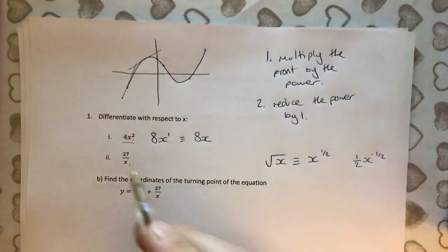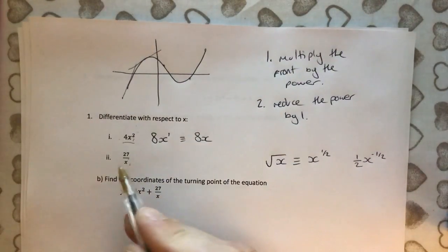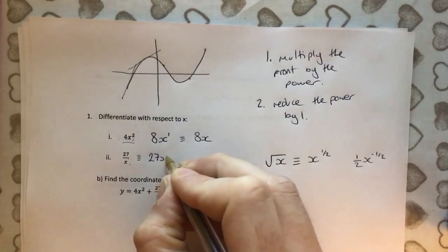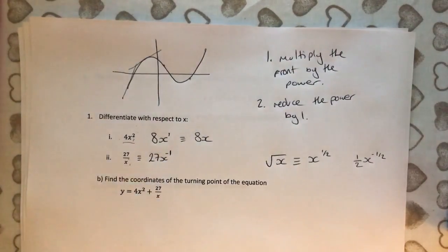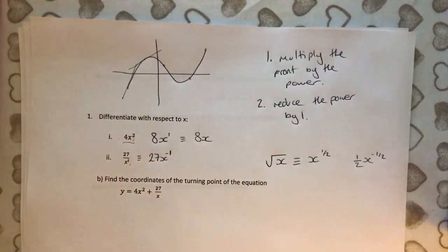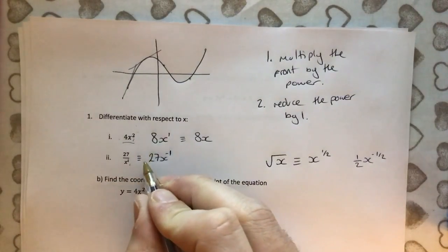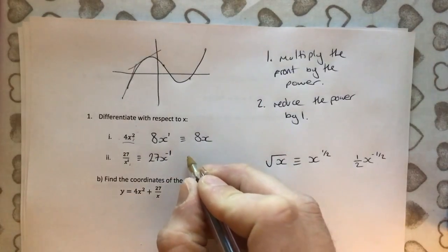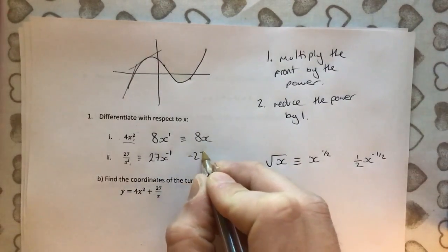But anyway, we're not doing that one. We're doing this one. So if it's on the denominator, this is the same as 27x to the minus 1. Because it was the power of 1. And then when we bring it up from the denominator, we need a negative power. And we just do the same thing. We times the front by the power. The power of 27 times minus 1 goes to minus 27.